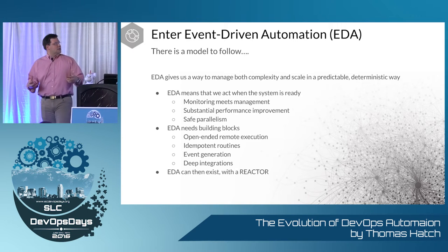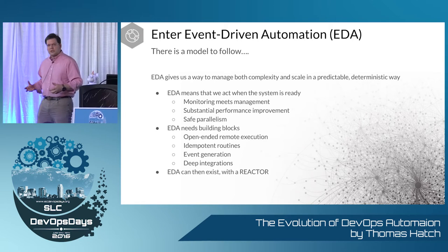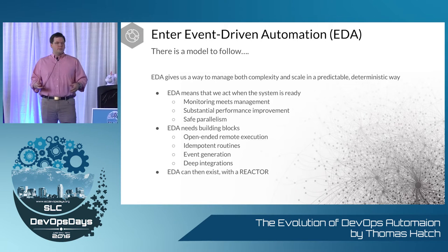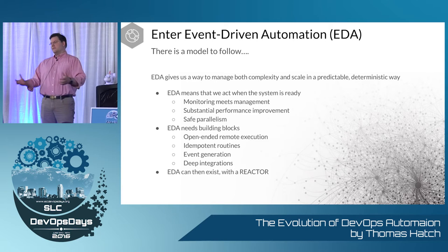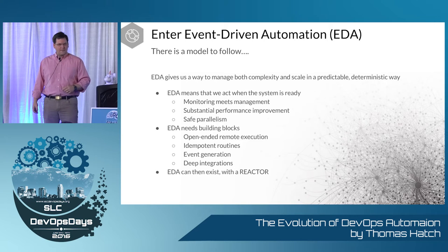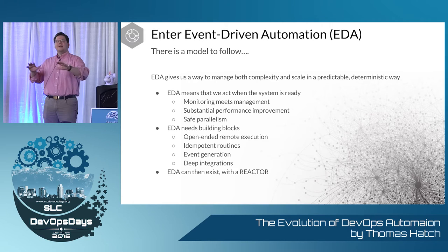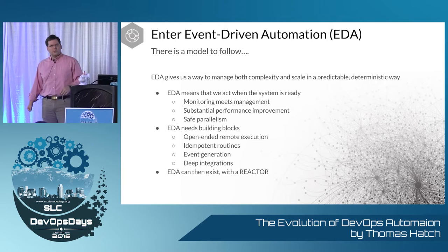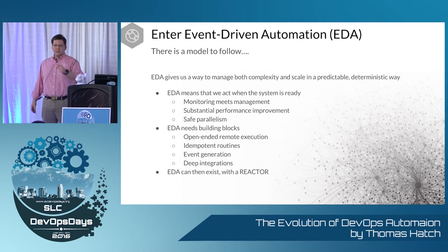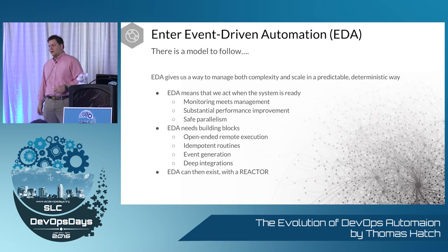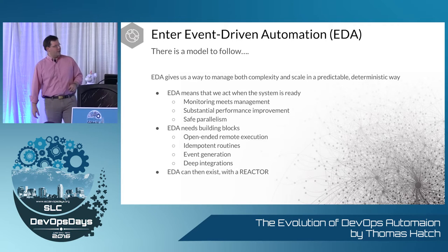This is where the concept of an event-driven automation system comes into play. Event-driven automation means we are receiving events from multiple places, taking those events, and making decisions based upon them. It also means we have the means to have many parallel management operations happening at the same time in a smooth, seamless, cooperative way — making it very easy for systems to wait asynchronously until the data is available for them to modify themselves.